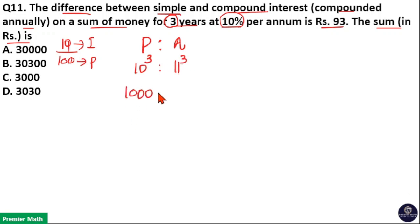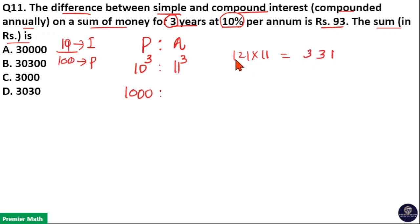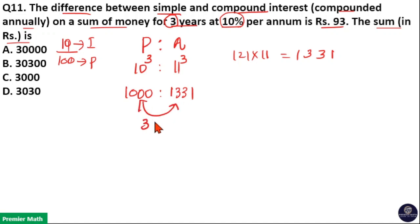10 cubed is equal to 1000 and 11 cubed is equal to 11 squared into 11, that is 121 into 11. 121 into 11 is equal to: write 1, 2 plus 1 is 3, 2 plus 1 is 3, write 1. So 1331 is 11 cubed. Now take the difference between principal and amount. Here, principal is 1000 parts and amount is 1331 parts. So compound interest for 3 years is equal to 331 parts.